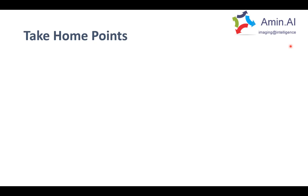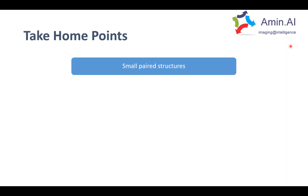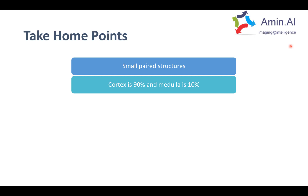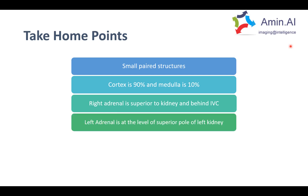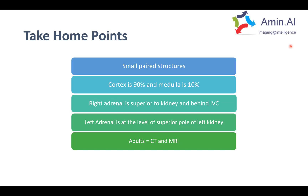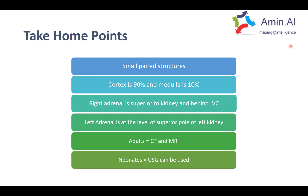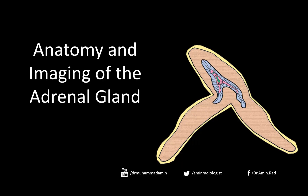To conclude with take-home points: the adrenal glands are small paired structures where the cortex is 90 percent and the medulla is 10 percent. The right adrenal is superior to the kidney and behind the IVC. The left adrenal is at the level of the superior pole of the left kidney. In adults, CT or MRI should be used for visualization, whereas in neonates, ultrasound can be used.